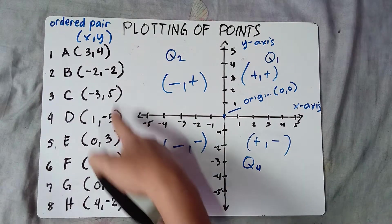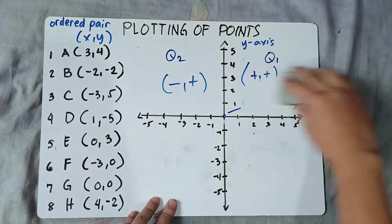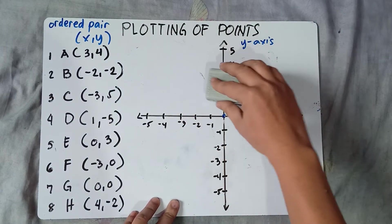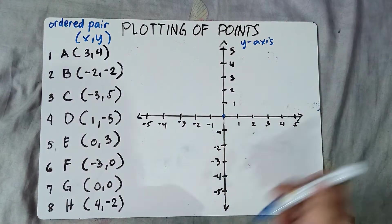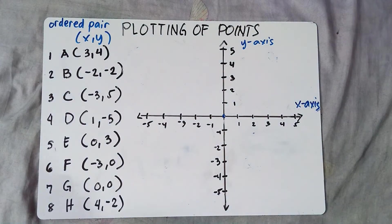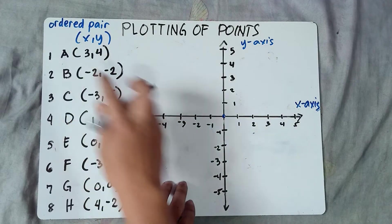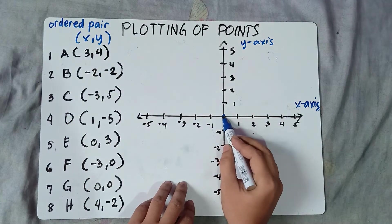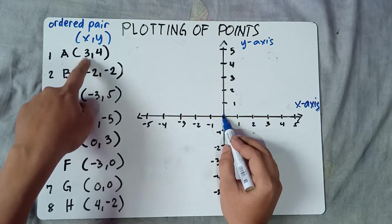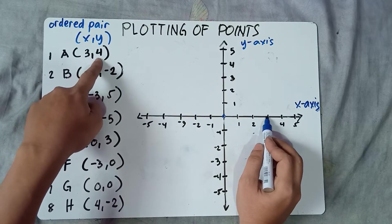Without further ado, let's plot these points. To plot the points, we follow the ordered pair, x and y. Let's start with A: (3, 4). Starting from the origin, x is 3, so you move 3 units to the right since this is positive 3 — 1, 2, 3.